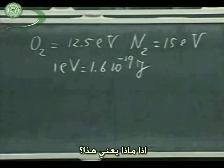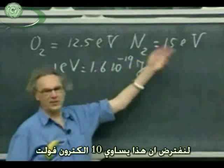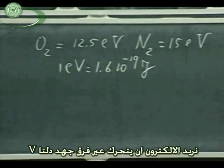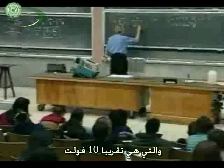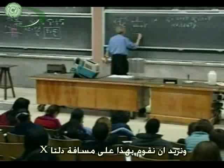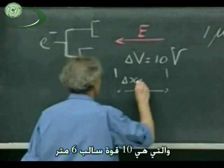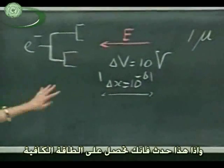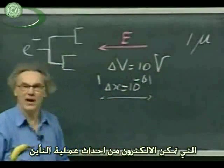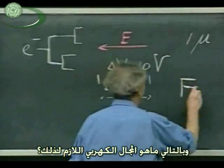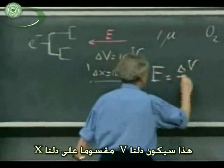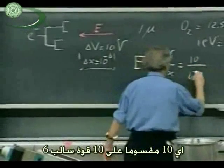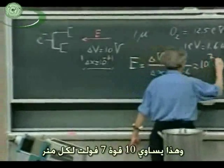So, assuming we need about 10 electron volts — just a back-of-the-envelope number — we want the electron to move over a potential difference ΔV of roughly 10 volts over a distance Δx of 10^-6 meters, one micron. The required electric field is ΔV divided by Δx, which is 10 divided by 10^-6, giving about 10^7 volts per meter.